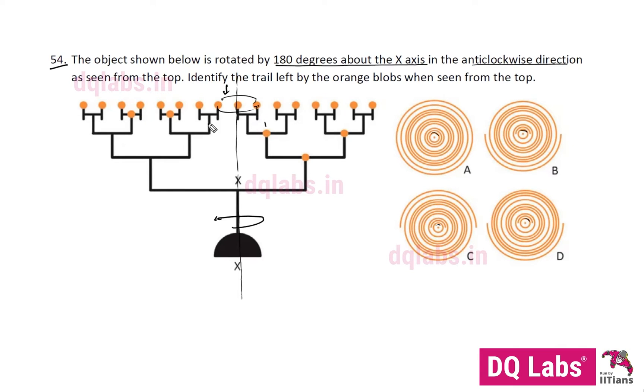There's going to be half a circle because there's nothing corresponding to us here. There's going to be half a circle. Next, B has it, A does not have it, C and D have it.